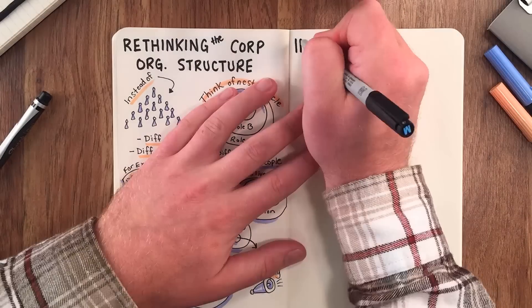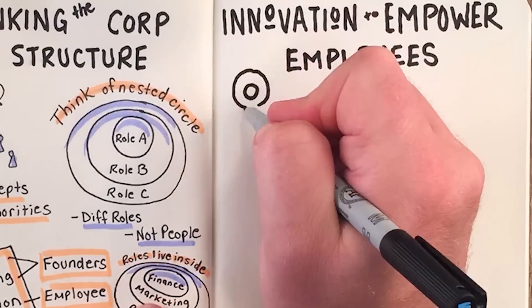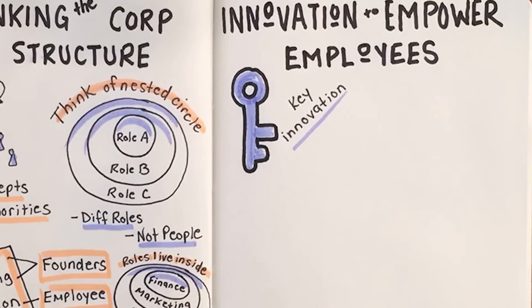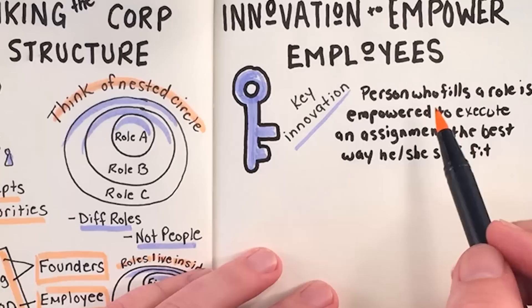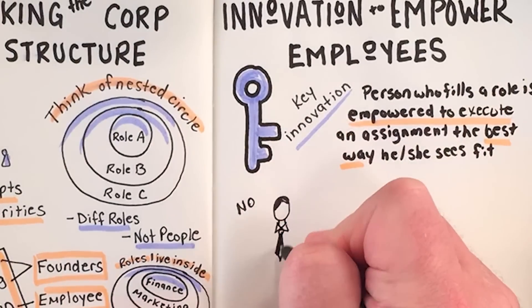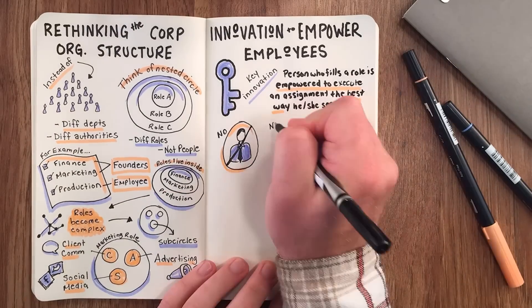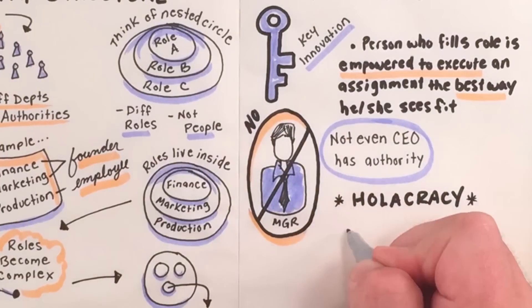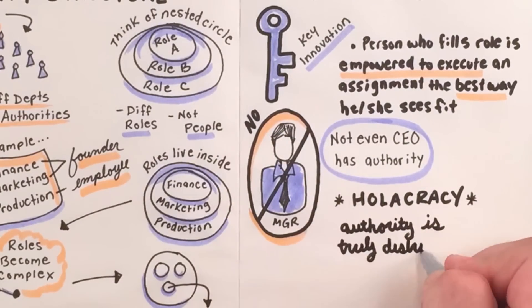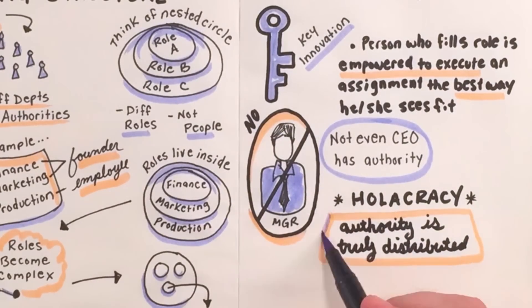Innovation to empower employees. One of the key innovations of Holacracy is that the person who fills a role is empowered to execute an assignment the best way he or she sees fit. There's no manager to override that decision and no one has such authority, not even the CEO. In this sense, Holacracy creates a very empowering environment where authority is truly distributed.